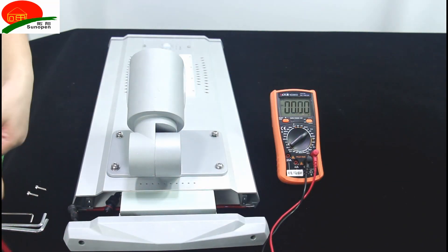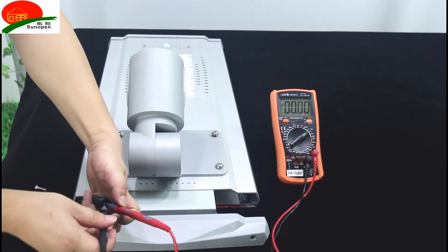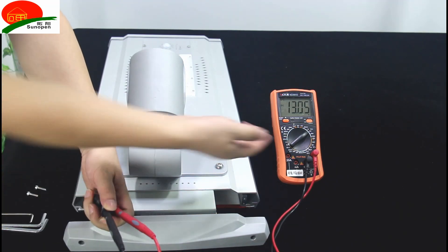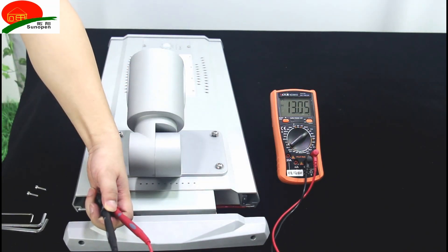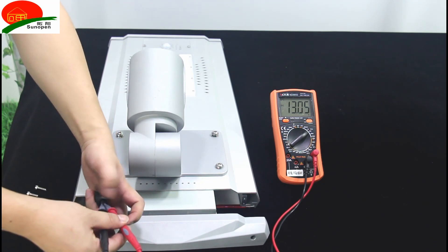We use the tool to test the working voltage of the battery. We can see here on the screen, it's 30 volts. This is normal.